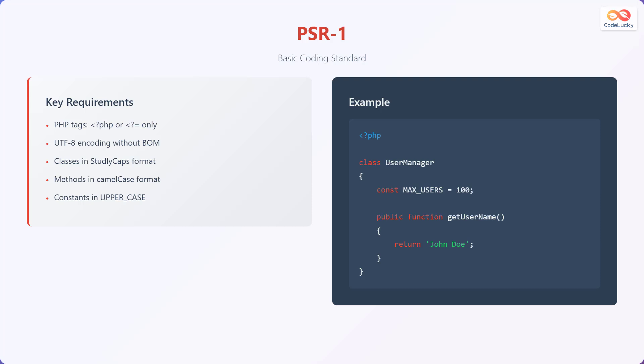For example, a class name would be UserManager, a method would be getUserName, and a constant would be MAX_USERS. Here is an example code snippet demonstrating these conventions.